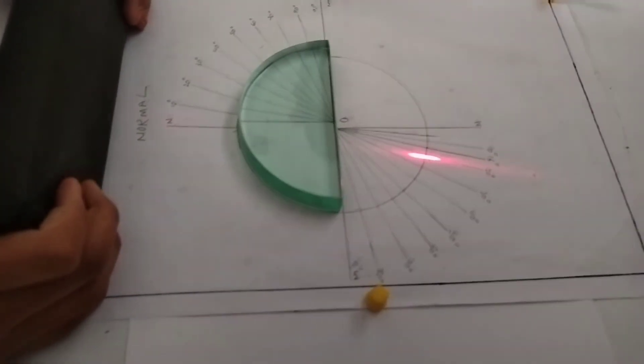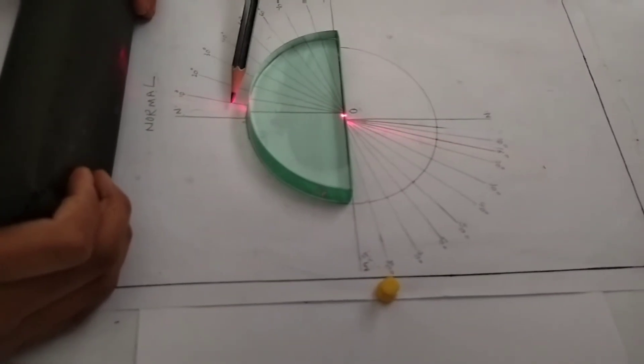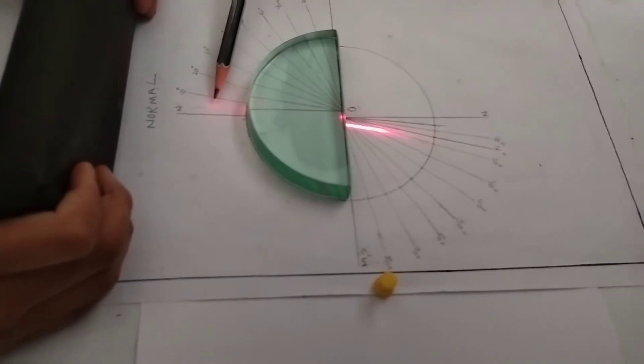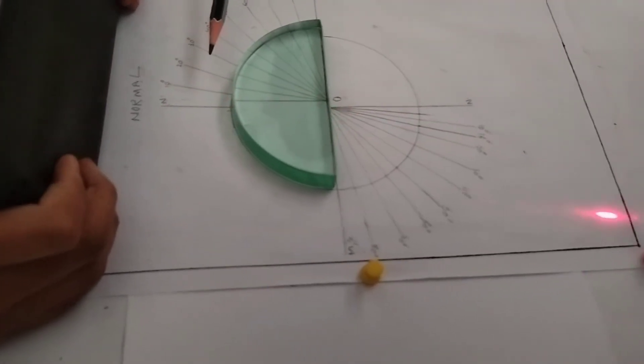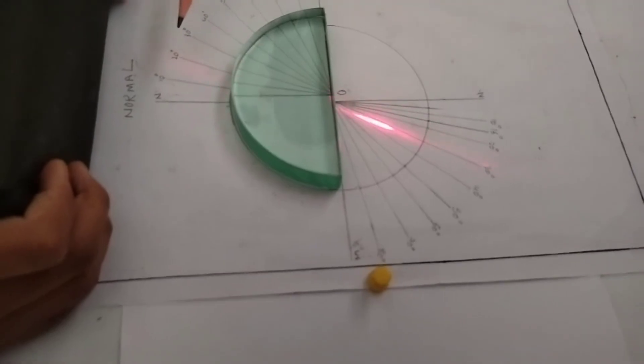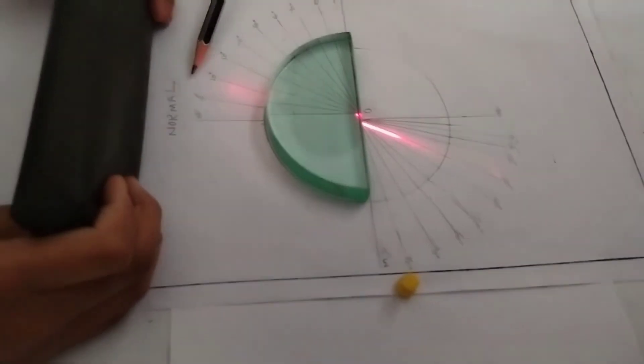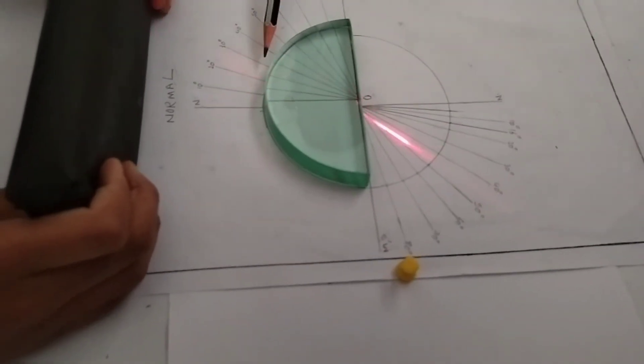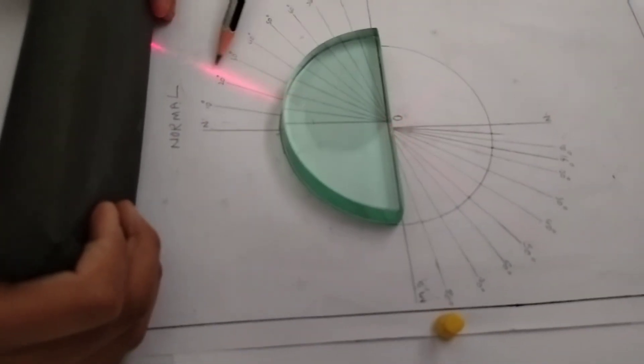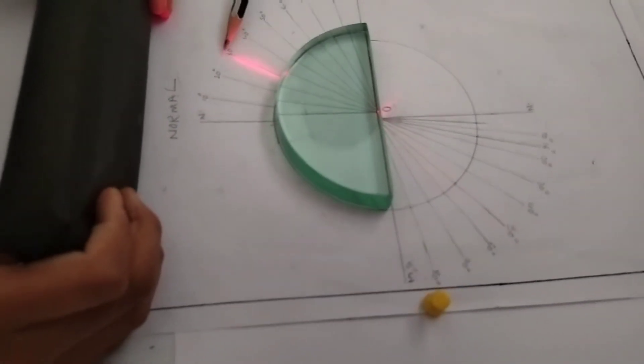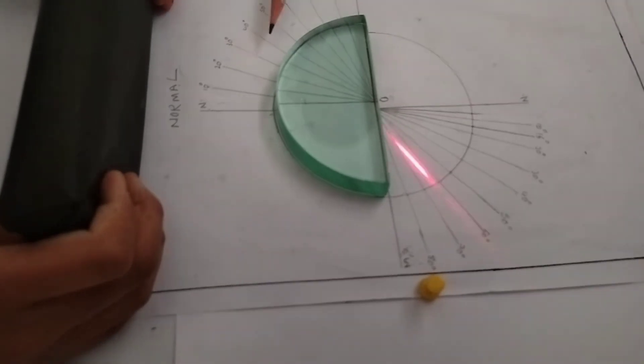Repeat the experiment with angles of incidence of 20 degrees, 30 degrees, 40 degrees, 50 degrees, and 60 degrees, and note the corresponding angles of refraction.